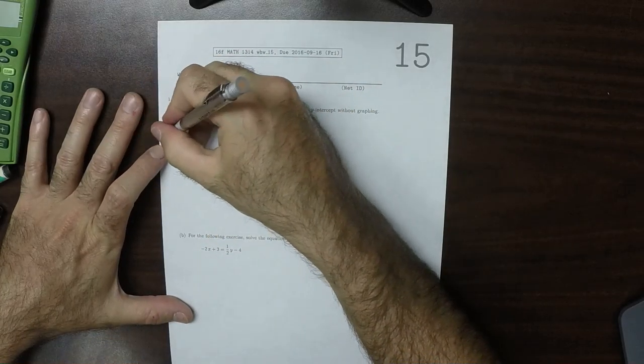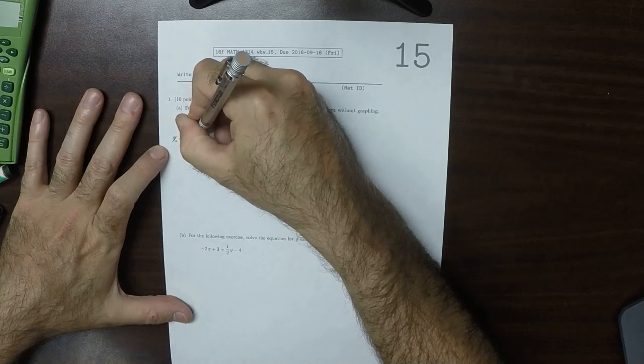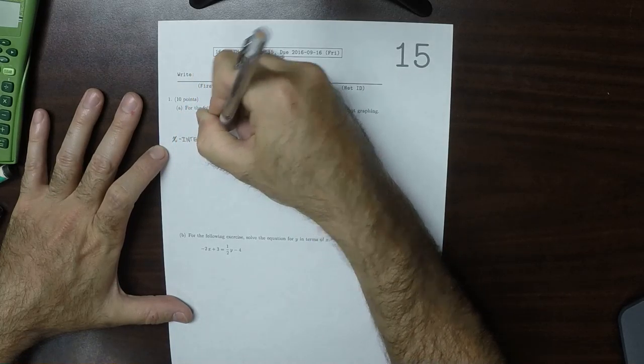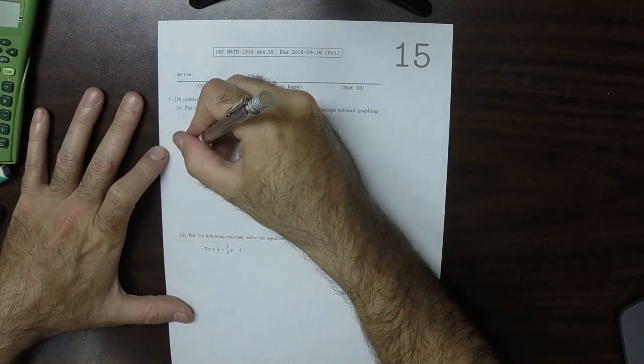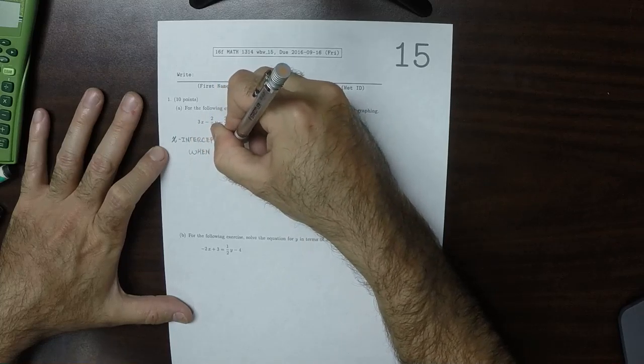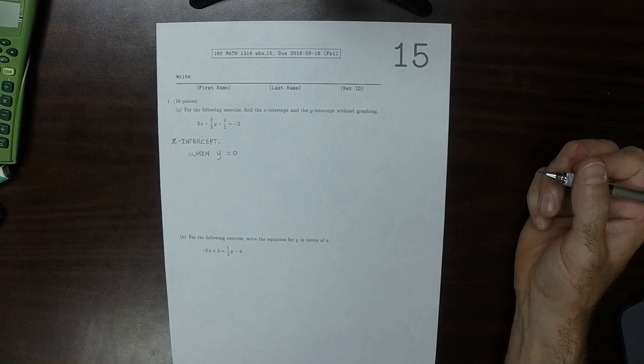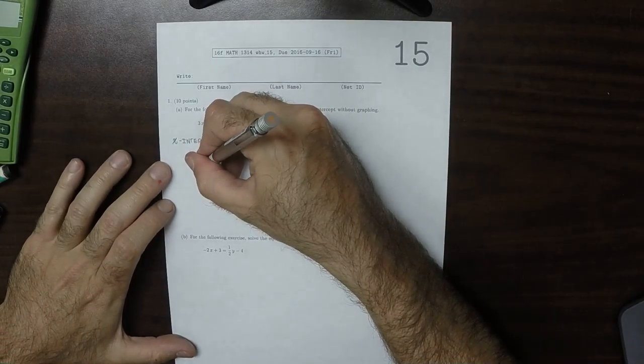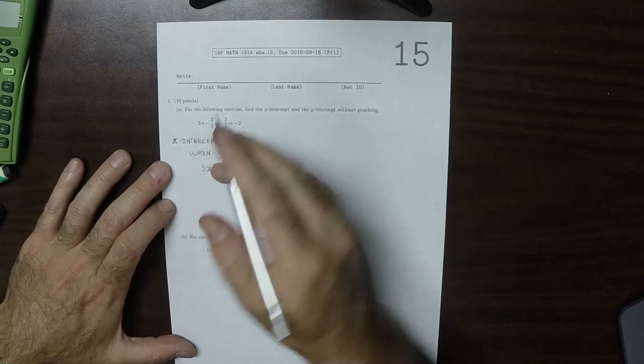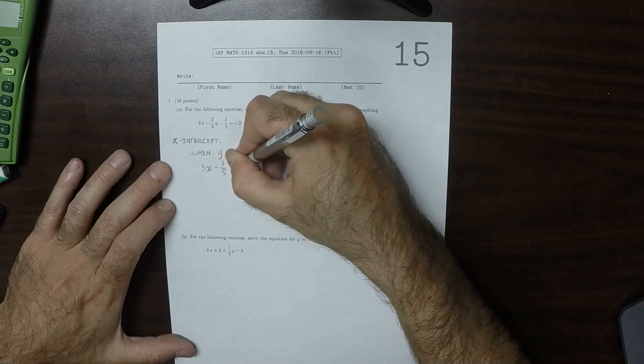Well, the x-intercept, the algebraic condition for this is when y is 0. So we'll plug in y is 0. That would be 3x, and that y is 0, so minus 3 over 5 is negative 2.